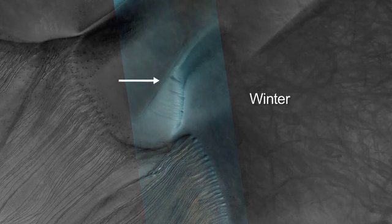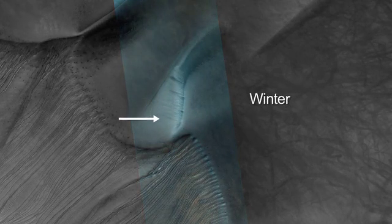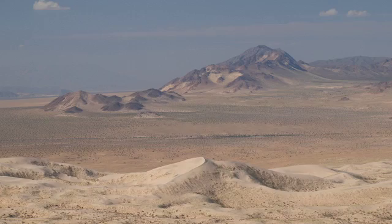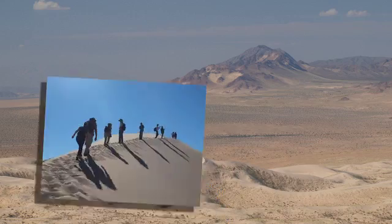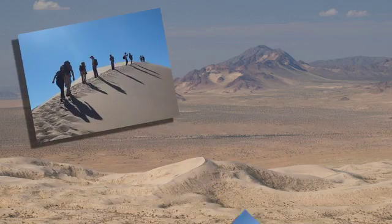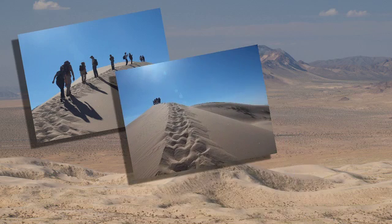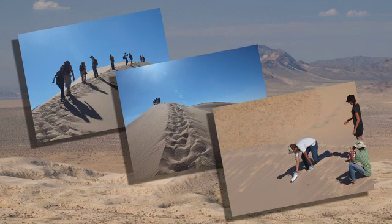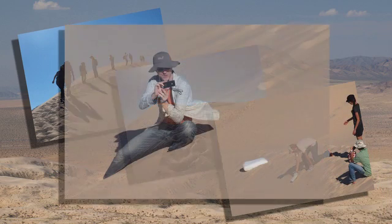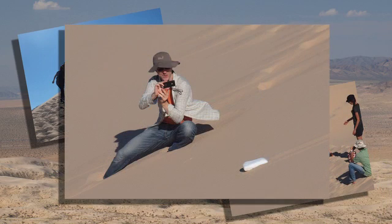Frozen carbon dioxide accumulates on the surface, and we think that some of this accumulation will compress down and actually form ice slabs and ice blocks. So we bought some frozen carbon dioxide — dry ice blocks — and we took them out to a dune slope to see what happened.